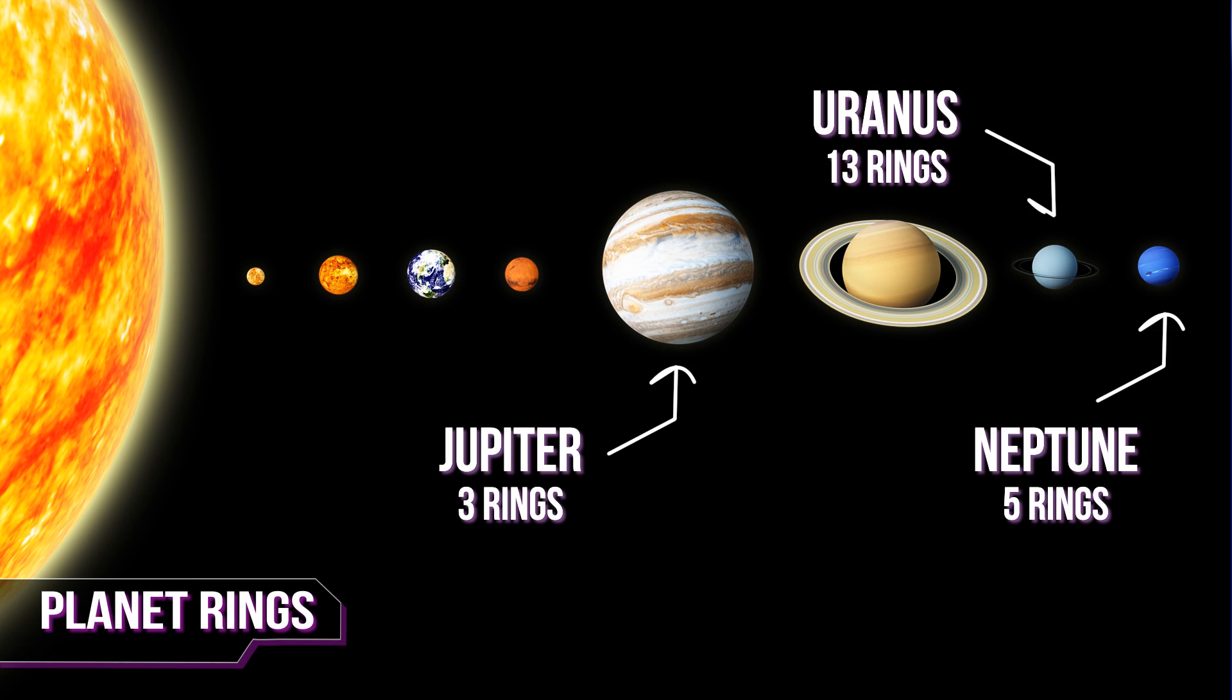Jupiter has three very faint rings, Neptune has five, and Uranus has 13. So the better question might be, why do all of our gas giants have rings?